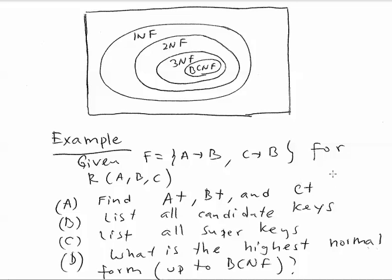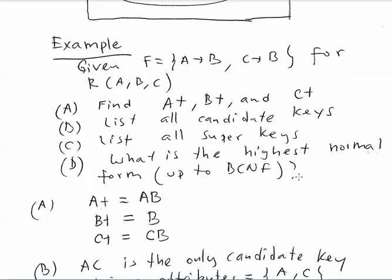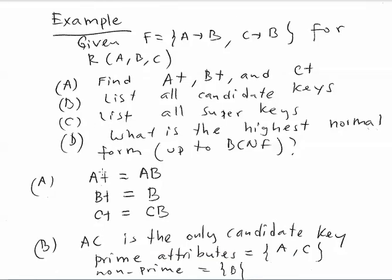For A+: the closure starts with A as the initial value. We check each functional dependency — A derives B, so we add B. Then we check anything that can be derived from A and B — nothing else. So A+ = {A, B}. For B+: we start with B and check the functional dependencies — nothing else can be derived from B alone. For C+: we start with C, then we see that C implies B, so we add B. Then we check for something derivable from C and B — nothing else. So A and C are close to being the candidate key.